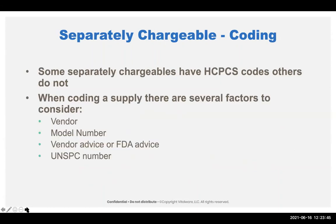The separately chargeable items are usually coded, but most coding groups don't handle this well. When coding a supply, the supply chain should have the vendor, model number, vendor or FDA advice, and the UNSPSC number on file for every single item. Even if you use software or go to the vendor website, this helps you determine the best code. I often see CDM people putting in codes they believe are correct, but when you go to the vendor website or the FDA, they actually have a more specific code.